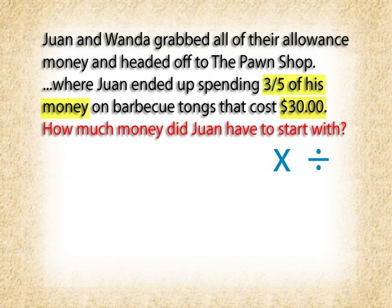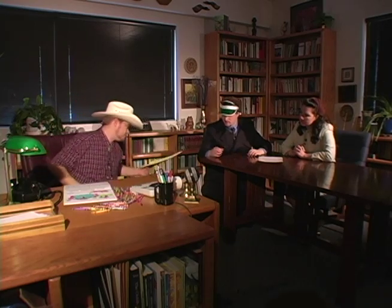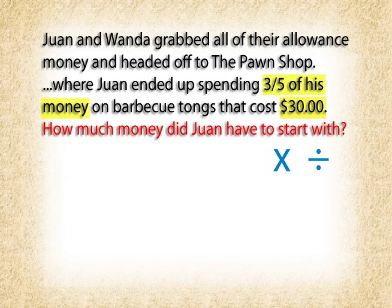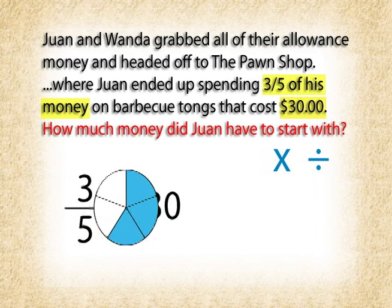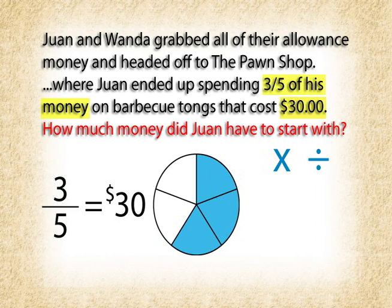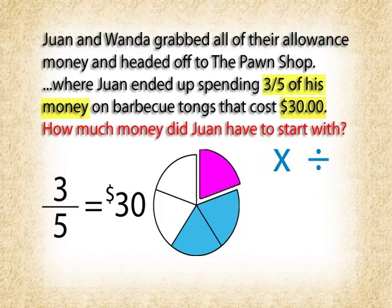Let's see if we can solve this problem by thinking about it logically. Hey Tex, do you have anything to write on? You bet. So we need to find out how much money Juan had at the beginning. We know that the thirty dollars he spent was equal to three-fifths of all of his money. Well, if three-fifths is part of his money, how many fifths do you need to equal all of his money? Five. Perfect. So if five-fifths is the whole, and we know that three-fifths is equal to thirty dollars, what can we do to figure out what one-fifth is?